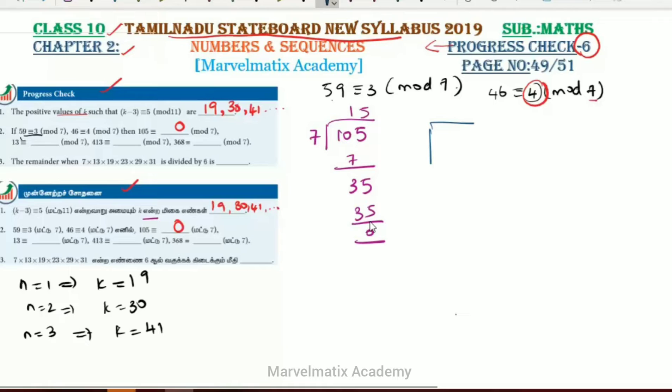Second question: find the remainder. Using the 7 times table, we calculate step by step. For 413 divided by 7: 7 times 5 is 35, 7 times 6 is 42. We get 7 times 9 is 63. The remainder is 0. So the answer is 0.